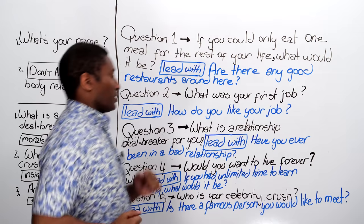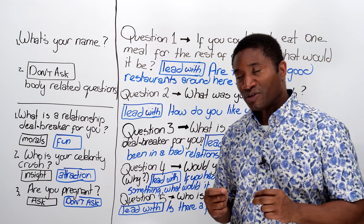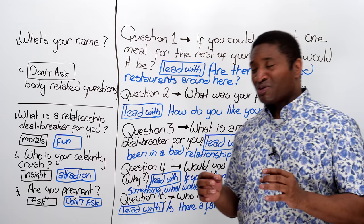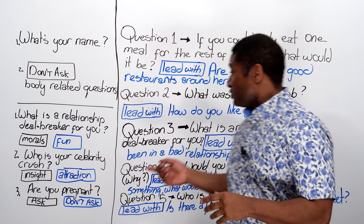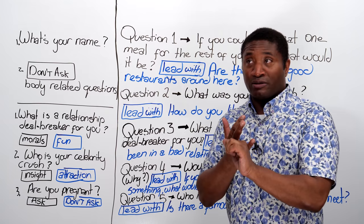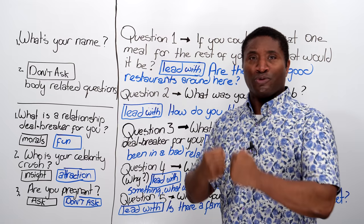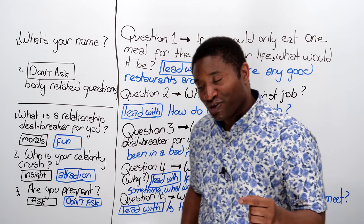Question number three: what is a relationship deal breaker for you? This isn't a fun question — this is a question to find out someone's morals, what they feel is morally right or wrong, what they will tolerate and what they will not tolerate. Tolerate means you'll say it's okay, I don't like it, but it's okay. If you don't tolerate it, you say it's not okay, I will not stand for this, it's over. A deal breaker in a relationship can be: do they lie, will they cheat, will they say bad things to you? These are things that you stand for, and you will not let someone do to you. When you break a deal, the relationship will be cut or broken if this happens.